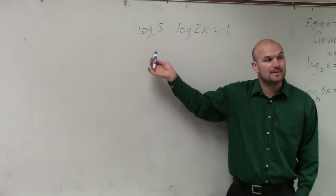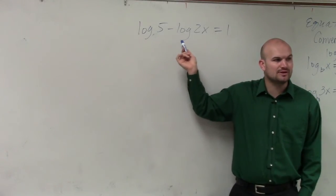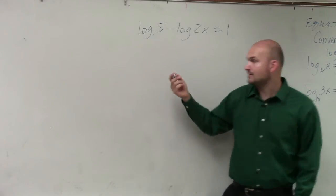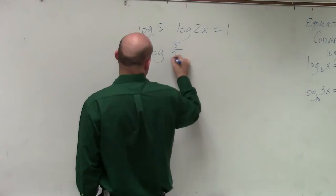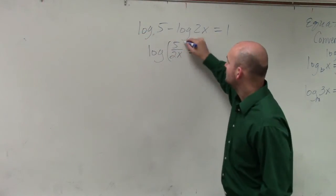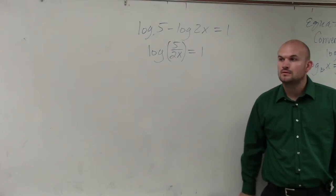So what we can do in this example is, can I condense this down to one logarithm using my condensing that we did at the beginning of class? Yeah. So I can do log of 5 divided by 2x equals 1. Do you guys agree with me? Yes?